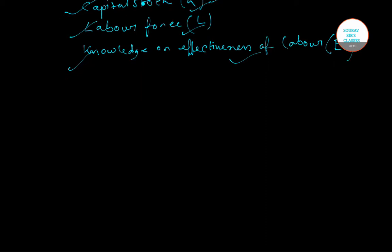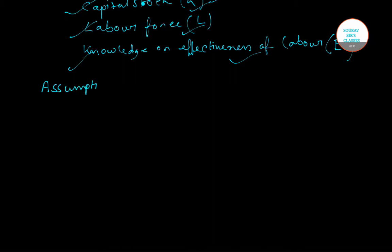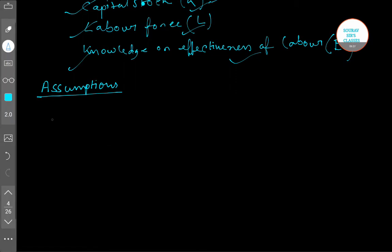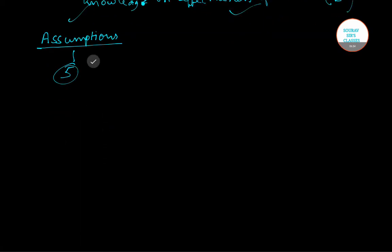Now we'll look at the assumptions of the Solow Growth Model. The focus of the Solow model is on the properties of the production function and the evaluation of three factors of production — that is, capital, labor, and knowledge — over time. The Solow growth model is based on five assumptions.